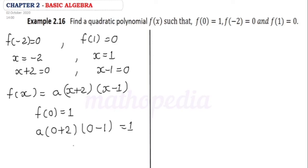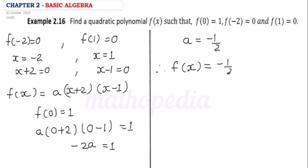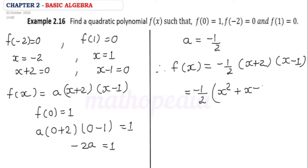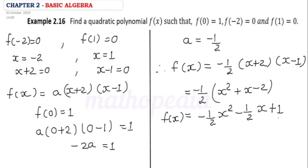Multiplying this, we get -2a = 1, so a = -1/2. Therefore f(x) = a(x + 2)(x - 1) = -1/2 · (x + 2)(x - 1). Expanding (x + 2)(x - 1) gives x² + x - 2. Multiplying by -1/2 we get -1/2·x² - 1/2·x + 1. Therefore f(x) = -1/2·x² - 1/2·x + 1 is the required quadratic polynomial.